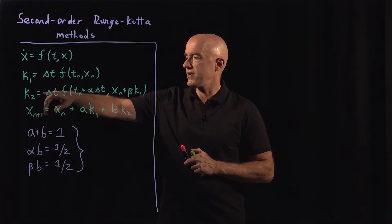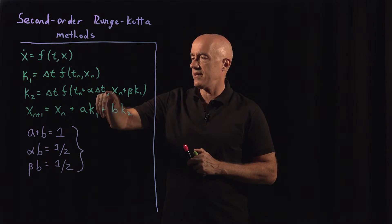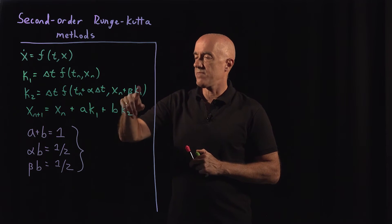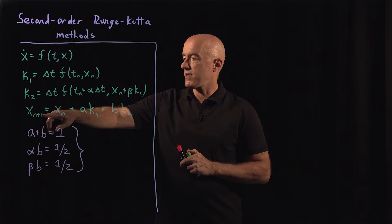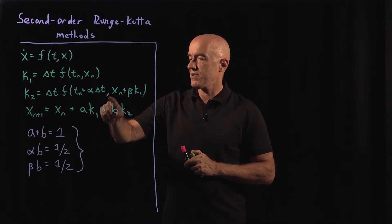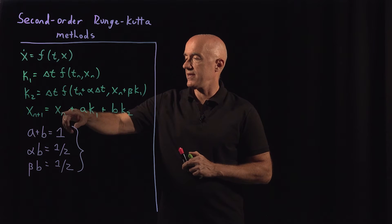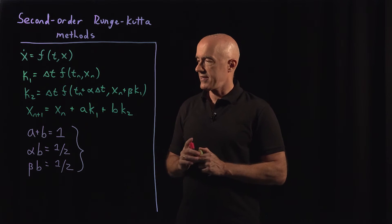And then k2 equals delta t f of (t_n plus alpha delta t, x_n plus beta k1). So alpha and beta then are two parameters. And then x_{n+1} equals x_n plus a times k1 plus b times k2. So x_{n+1} equals x_n plus some weighted average of k1 and k2.